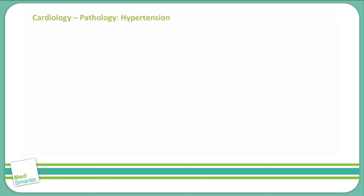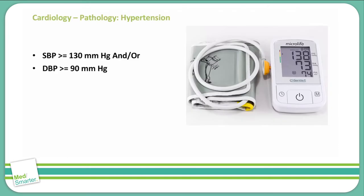Let's move on and discuss some more cardiac pathology. Specifically, let's discuss hypertension. Hypertension is defined as a systolic blood pressure that is greater than or equal to 130 mmHg and/or a diastolic blood pressure greater than or equal to 90 mmHg.